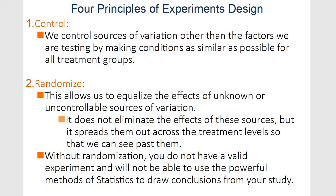There are four major principles of experimental design. The first is to control all your factors — think about anything that might affect your response and adjust for it. The second is to randomize. That is super important. This helps us not worry about unknown or uncontrollable sources. Without randomization, it's not a valid experiment and will be useless.